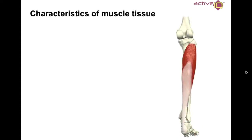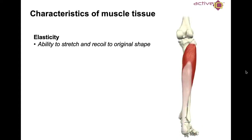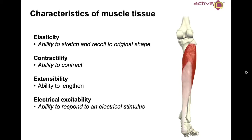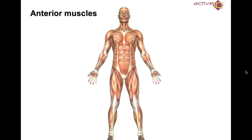The characteristics of muscle tissue include: elasticity — the ability to stretch and recall the original shape; contractility — the ability to contract; extensibility — the ability to lengthen; and excitability — the ability to respond to an electrical stimulus.